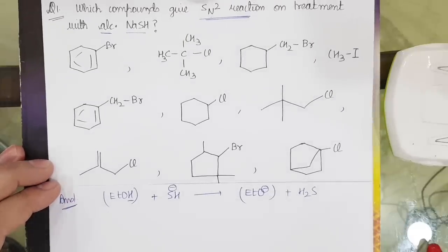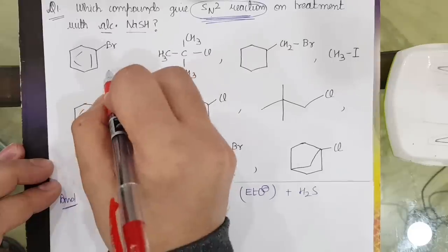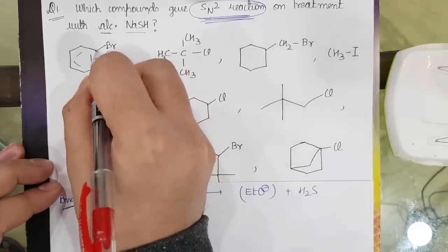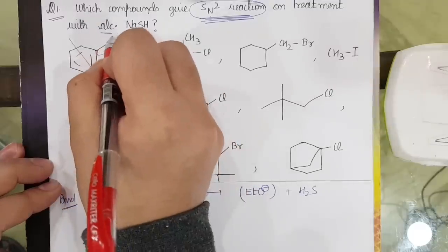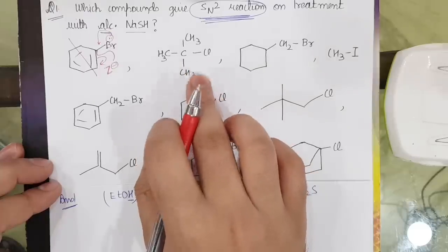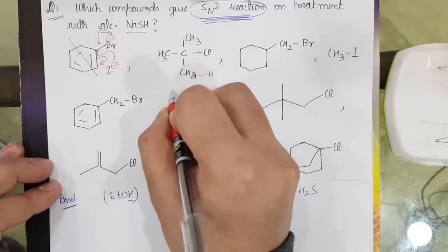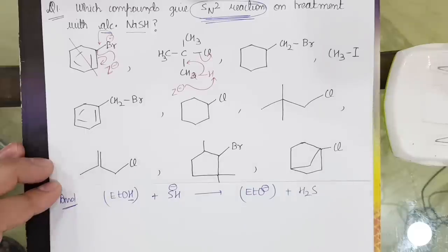Now let us understand SN2 reaction. Substitution: can the nucleophile come and attack this carbon and take out the Br minus? No, it cannot, because the bromine is resonance stabilized due to a partial double bond. If we take the tertiary case, in tertiary we prefer elimination — the Z minus leaves, the bond moves, taking out the Cl and giving alkene formation. Since alkene is formed, elimination is preferred, which means SN2 will not occur.